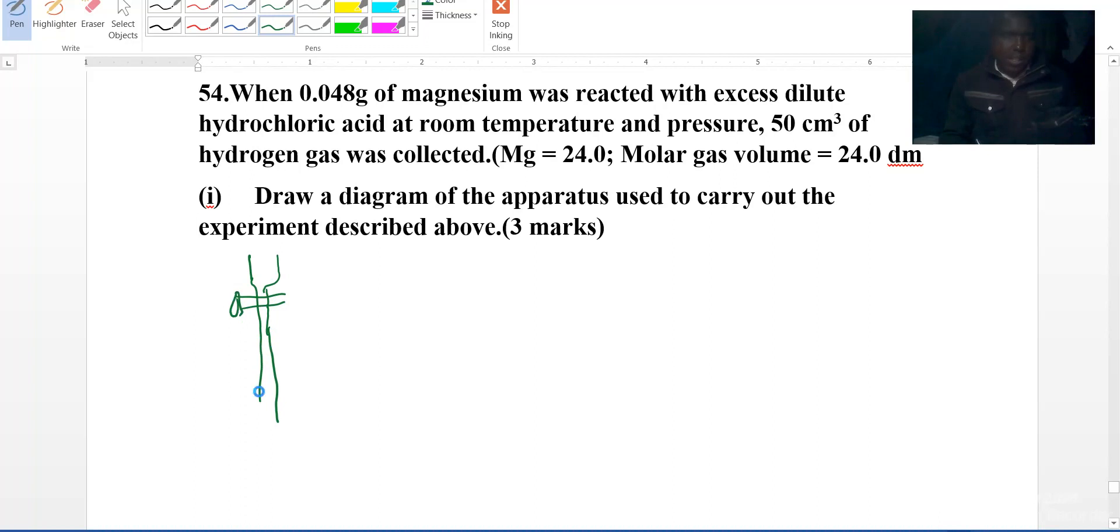This is the setup. Then you draw the conical flask. You put inside the HCl and then you put some magnesium.